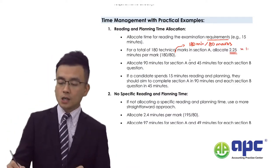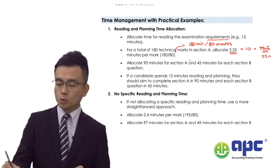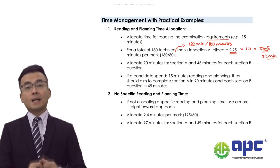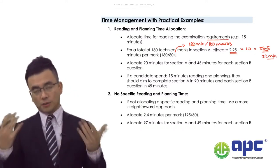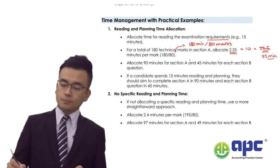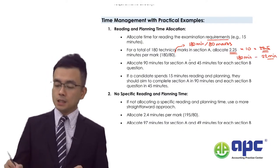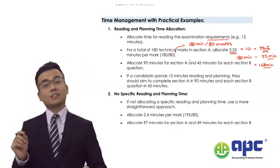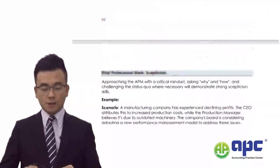For example, if the requirement is for 10 marks, we need to allocate 22.5 or 22 minutes to that requirement. If the clock counts down from 180 minutes after you use the first 15 minutes of reading time, minus 22 means 168 minutes remaining. When the clock counts down to 168, you need to stop and move on to the next requirement. That would be a very good starting point.